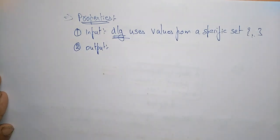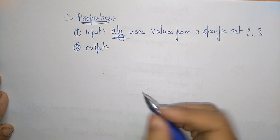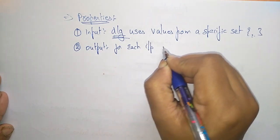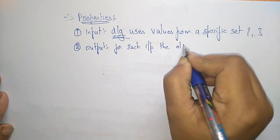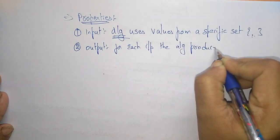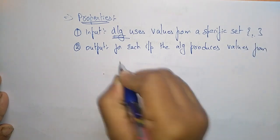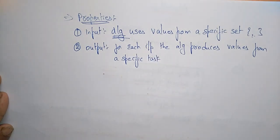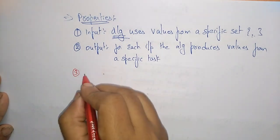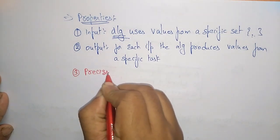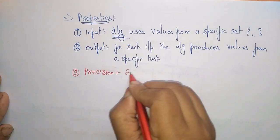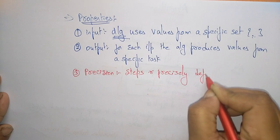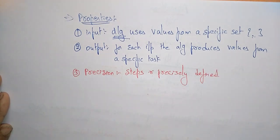The next property is output. For each input, the algorithm produces values from a specific set — that is the output. The third property is precision. Precision means the steps are precisely defined — that is what we call precision in an algorithm.